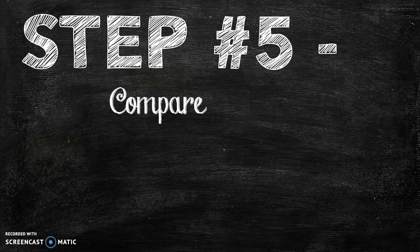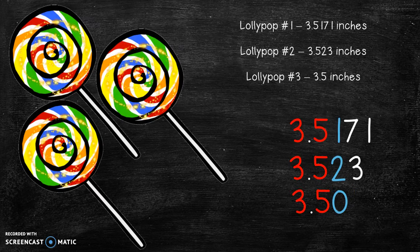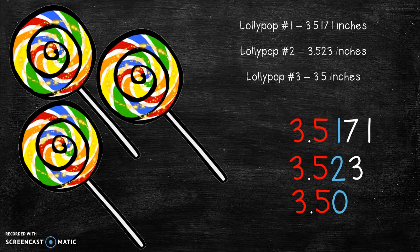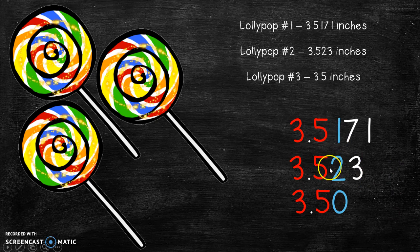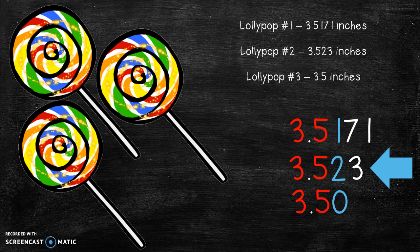Step five, compare. So let's see here, what number is going to be the biggest because we want the biggest lollipop. Is it the one, the two, or the zero? I can't hear you. It's the two. Very good.